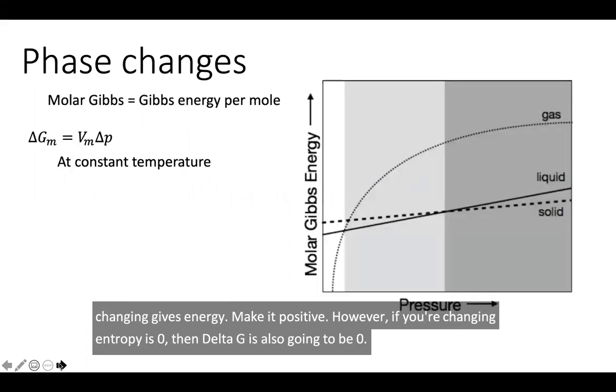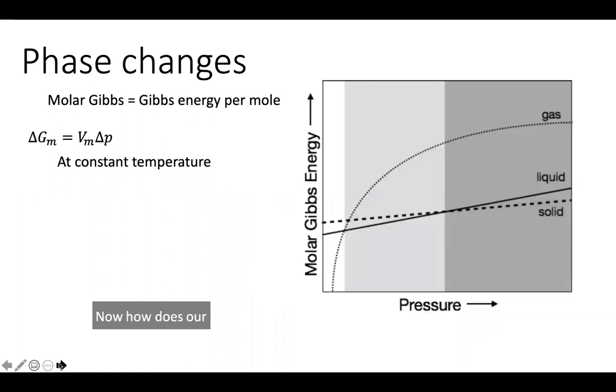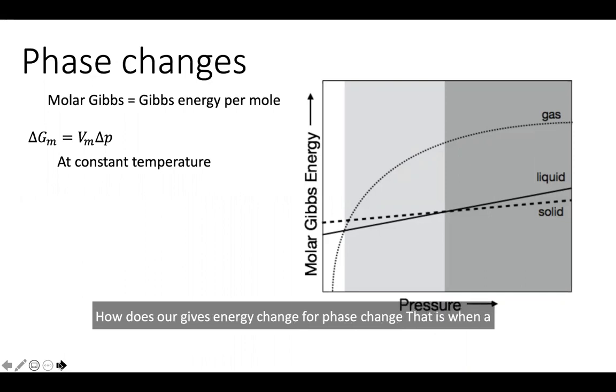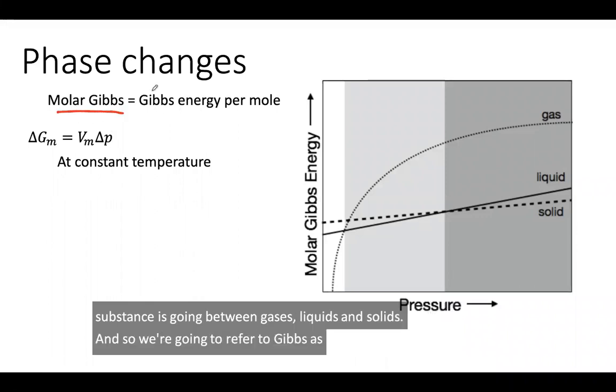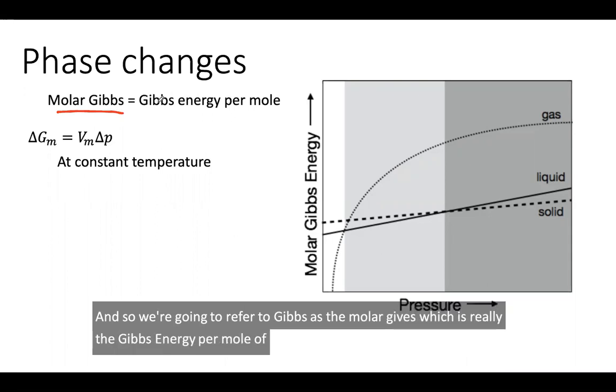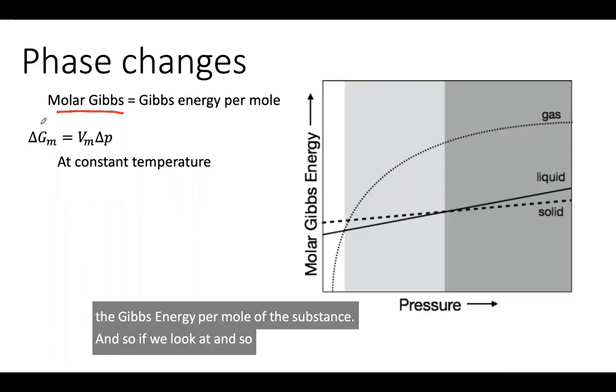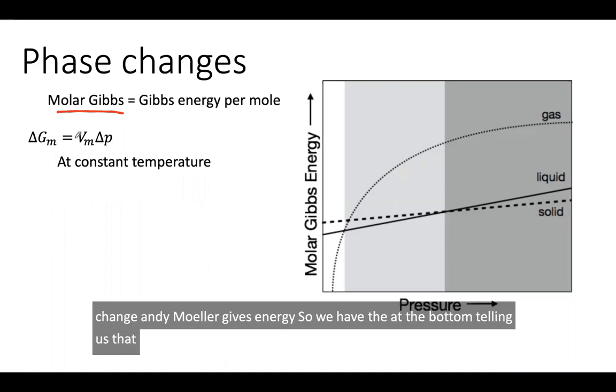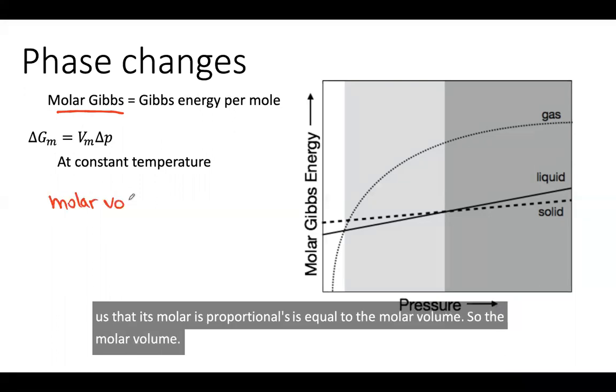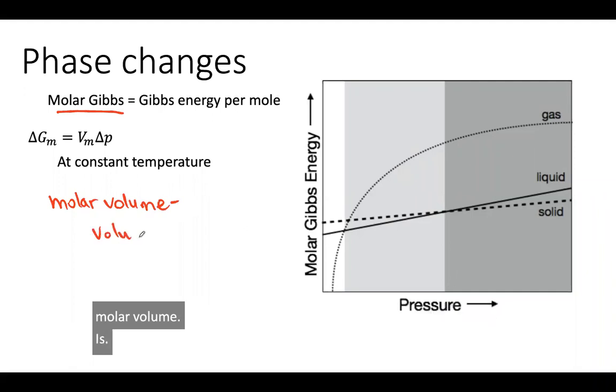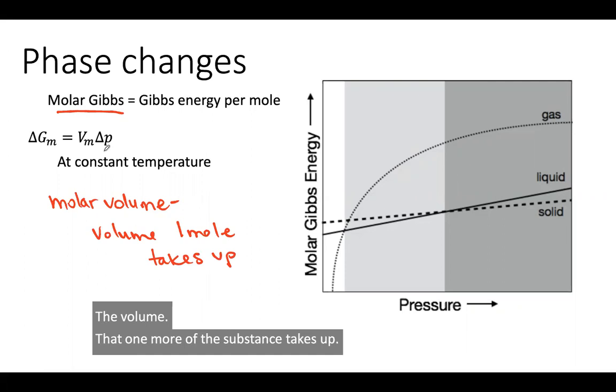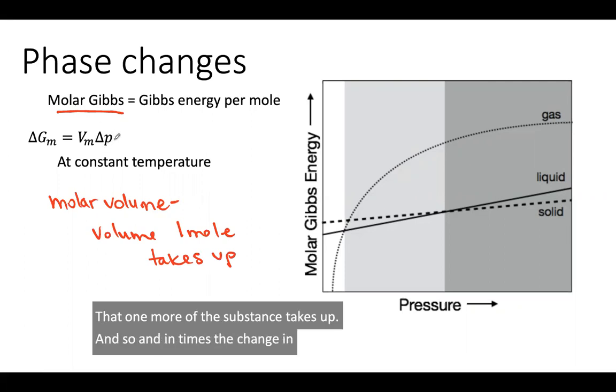So now how does our Gibbs energy change for phase change? That is, when a substance is going between gases, liquids and solids. We're going to refer to Gibbs as the molar Gibbs, which is really the Gibbs energy per mole of the substance. We have this equation that tells us that the change in the molar Gibbs energy is equal to the molar volume times the change in the pressure.